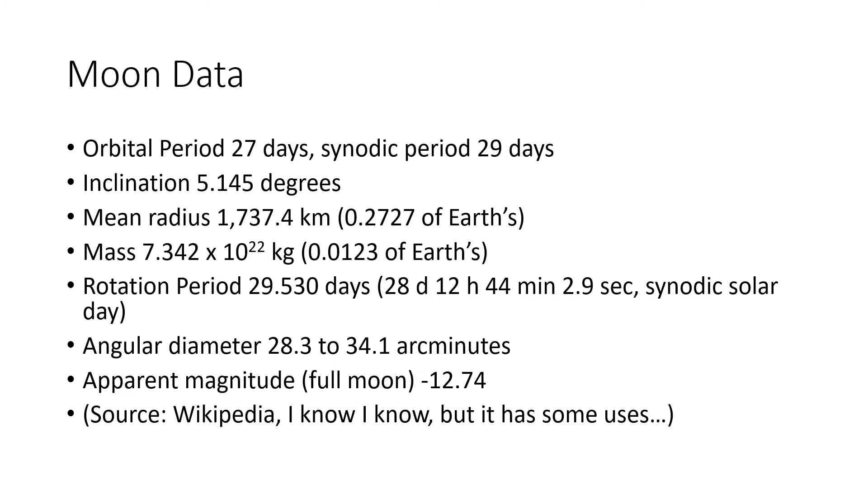Here is some data on the moon. The orbital period is 27 days, but that's kind of with respect to the background stars. The synodic period is actually 29 days. We've talked about that before.